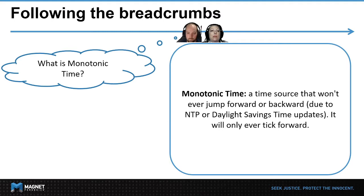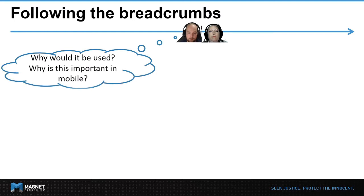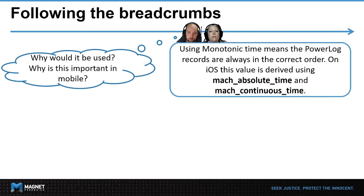Well, after looking into this, monotonic time is a source that won't ever jump forward or backward due to daylight savings time updates — it will only ever tick forward. For example, if you are programmatically recording how long a function takes during daylight savings time and you are using the display time, your total function run time will be affected by the daylight savings change, either positively or negatively. You can see the obvious bearing on forensics here, especially considering things like user manipulation.